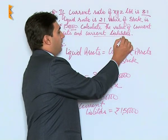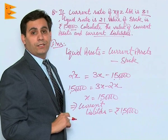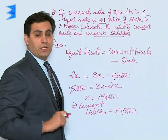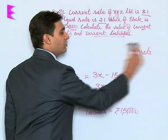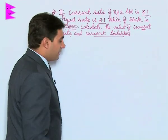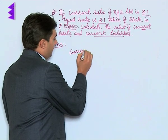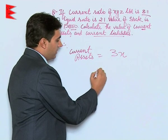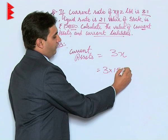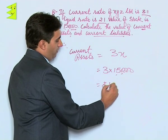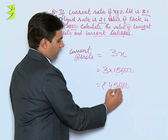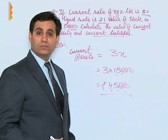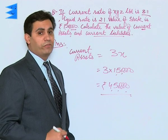We have calculated current liabilities. Now for current assets, going back to equation 1: current assets = 3X = 3 × 1,50,000 = ₹4,50,000. So this business has current assets of ₹4,50,000 and current liabilities of ₹1,50,000.